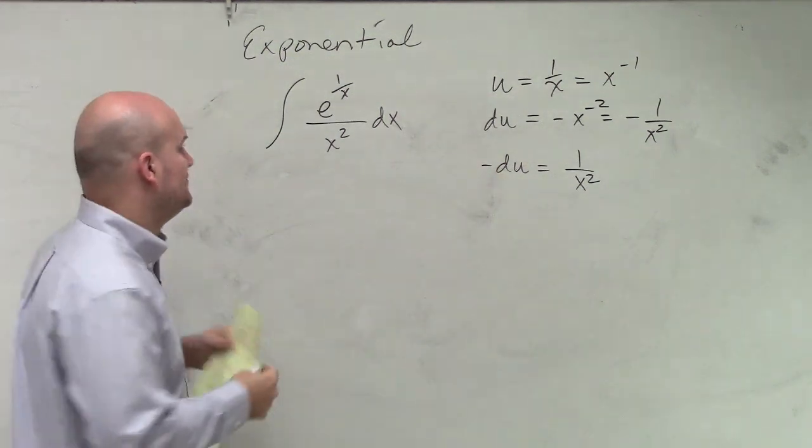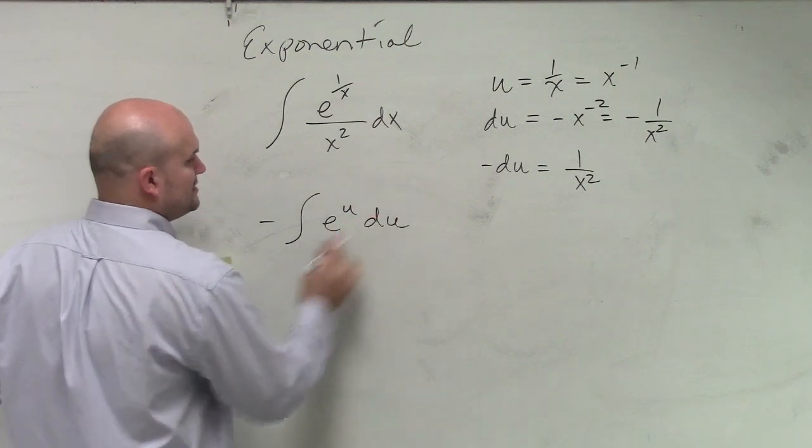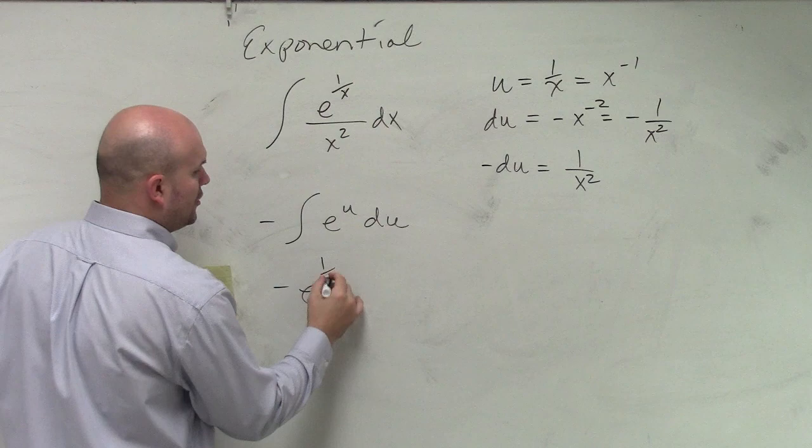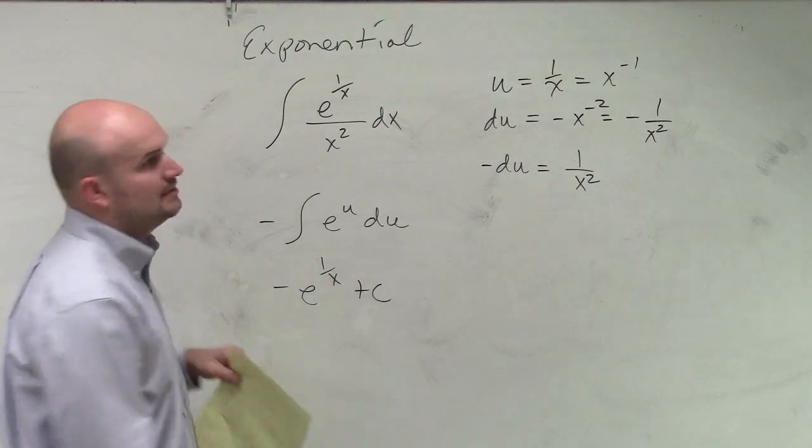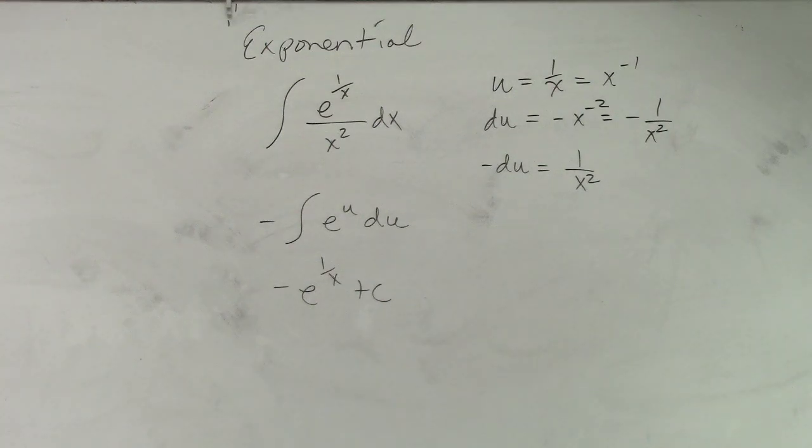So just be careful with that negative, because then what we have here is e to the u du, which is negative e to the 1 over x plus c. Now, even with explaining it, you guys can see that.